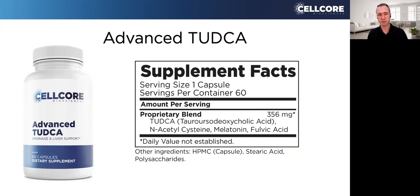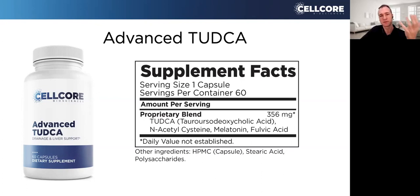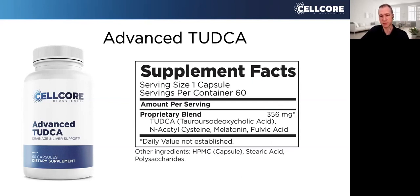Looking at the ingredients in Advanced TUDCA: there's N-acetyl cysteine, melatonin, and fulvic acid. The fulvic acid is part of the carbon technology, along with polysaccharides. When you hear melatonin, you think it's for sleep — but here melatonin is used as a driver; it won't make anybody fall asleep. The way it's connected to the TUDCA molecule, it's used as a driver. Melatonin is one of the strongest antioxidants out there and can get down to the mitochondrial level, which is why it's included.